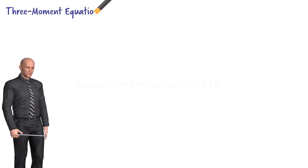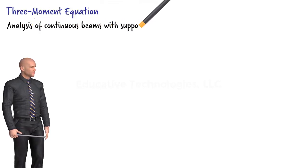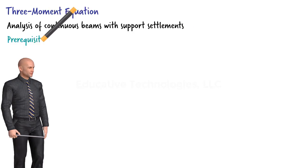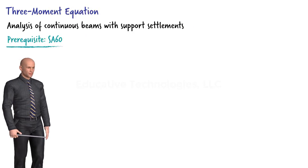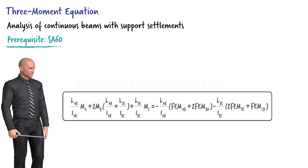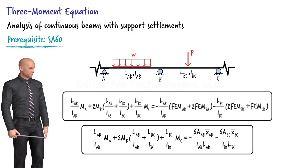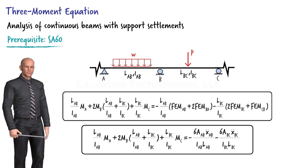The 3-Moment Equation for the Analysis of Continuous Beams with Support Settlements. In Lecture SA60, we obtained two versions of the 3-Moment Equation for analyzing continuous beams without support settlements. We can use either equation to determine the moments at the supports. Please review Lecture SA60 for an explanation of each equation and a description of its parameters.